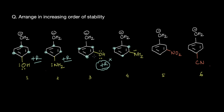When OH is at meta, resonance doesn't affect the stability much, so the more important factor is actually the inductive effect — the minus-I effect of the OH group. Since oxygen is highly electronegative, it pulls electrons via induction. Similarly, for NH₂ at meta, the +R effect doesn't contribute much to stability, and the more dominating factor is the minus-I effect, since nitrogen is more electronegative than carbon and can pull electrons by induction.